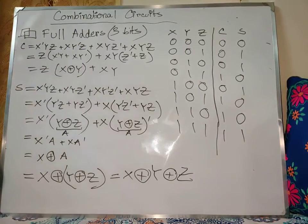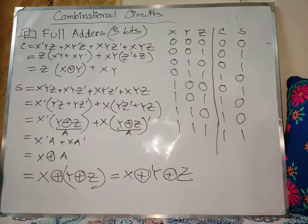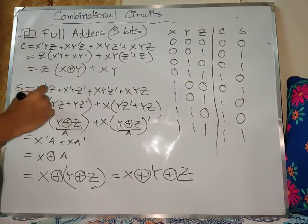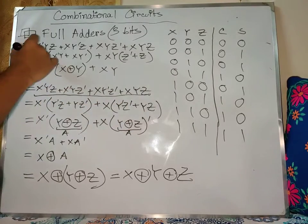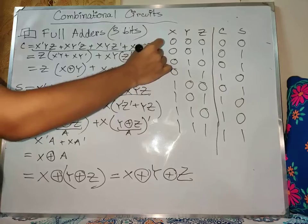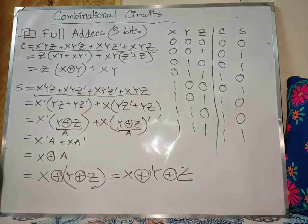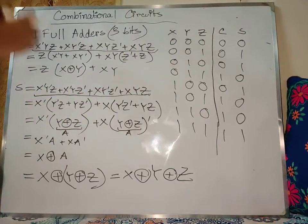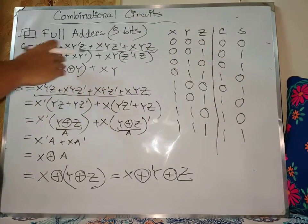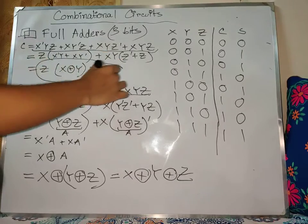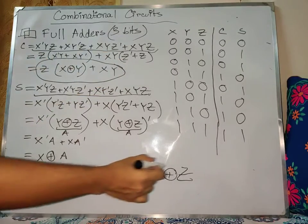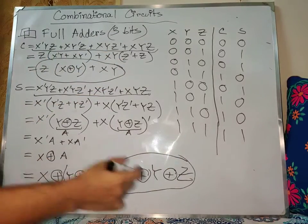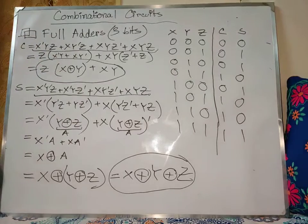The full adder circuit truth table and circuit equation are established. So the CR and SR equations — we are going to draw the circuit. When we draw the circuit, we are going to simplify. If we have the original function, we need the circuit drawn.